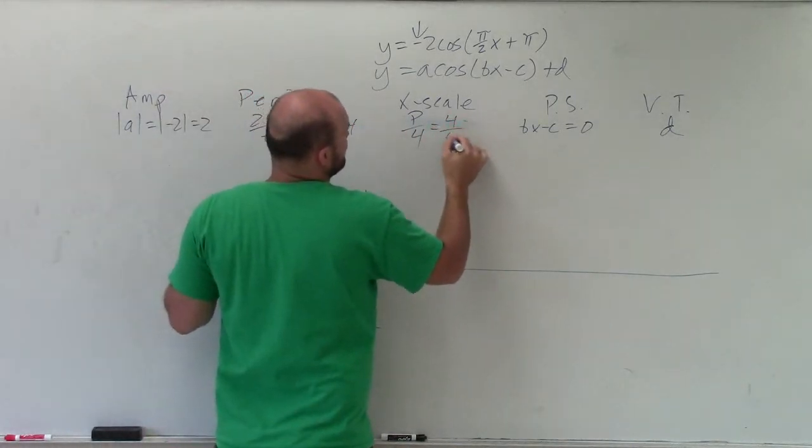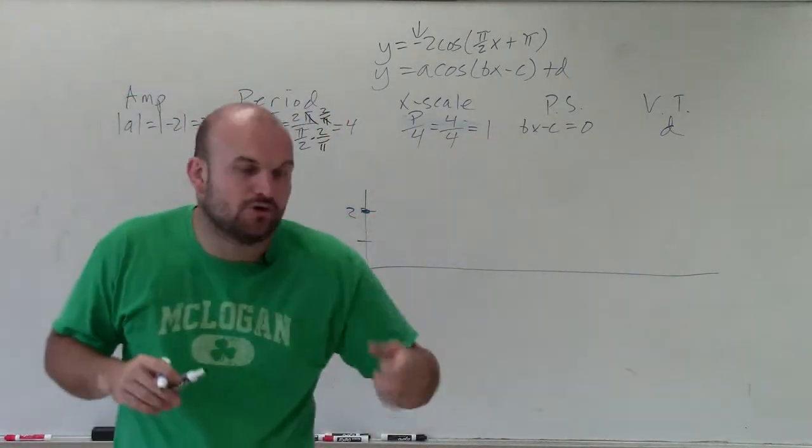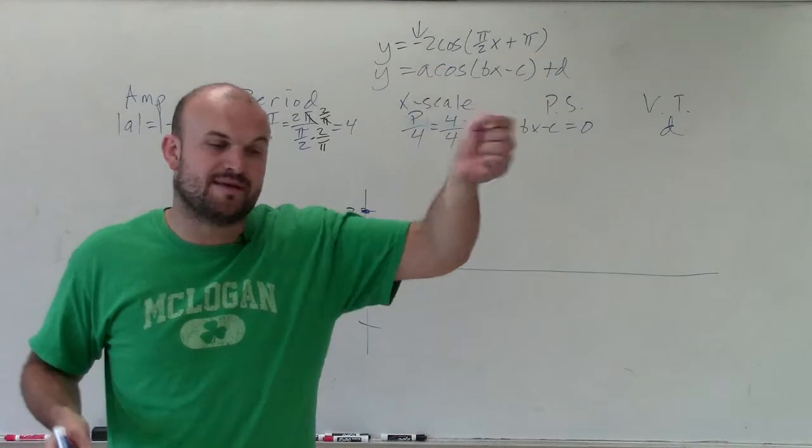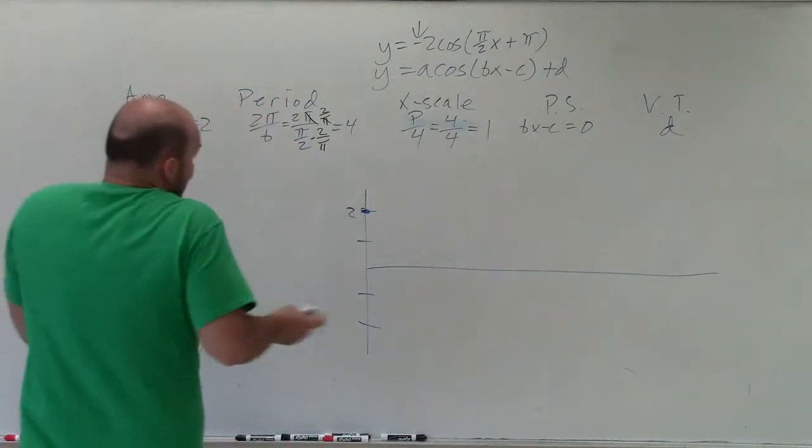Then my x scale is my period divided by 4, which equals 1. That means the distance from every single important point of a cosine graph, which is the maximum, the intercept, the minimum, the intercept, the maximum, is going to be 1. So I can scale this out.